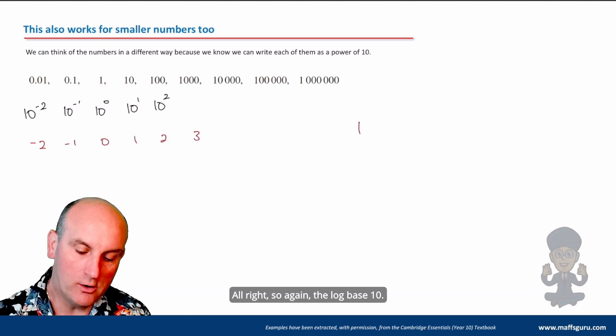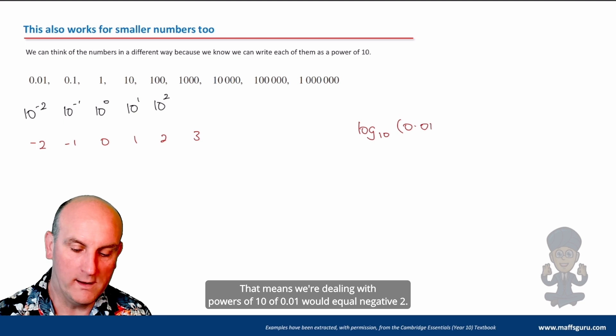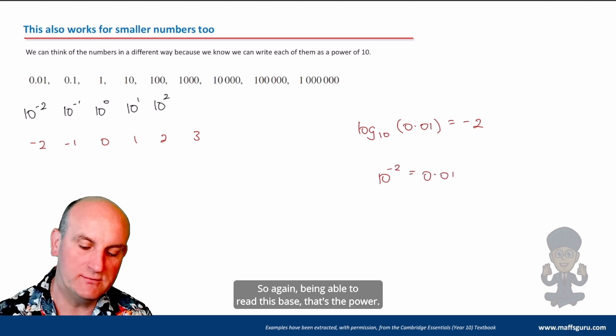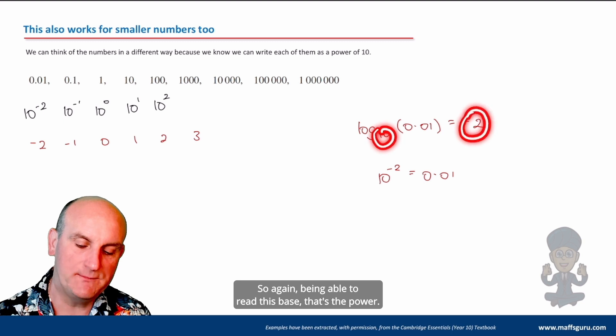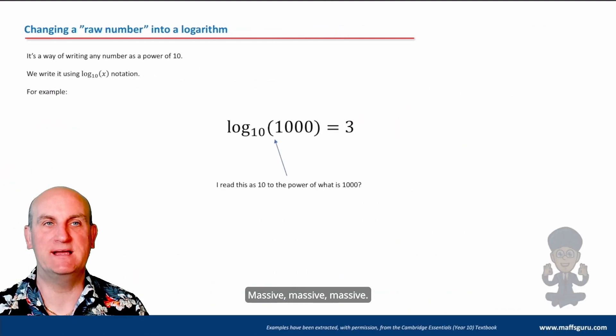So again, the log base 10, that means we're dealing with powers of 10, of 0.01 would equal negative two. Why? Because 10 to the power of negative two is 0.01. So again, being able to read this base, that's the power, that's my original or raw number. Massive.